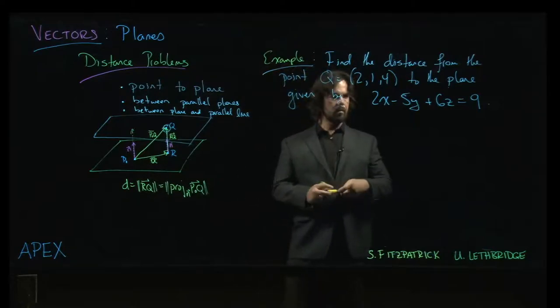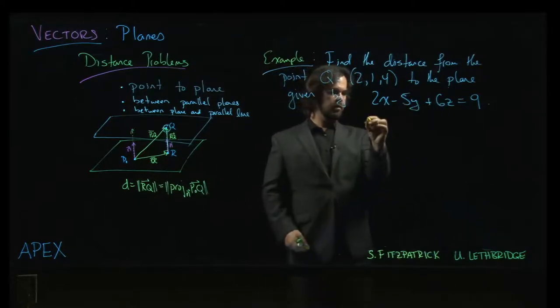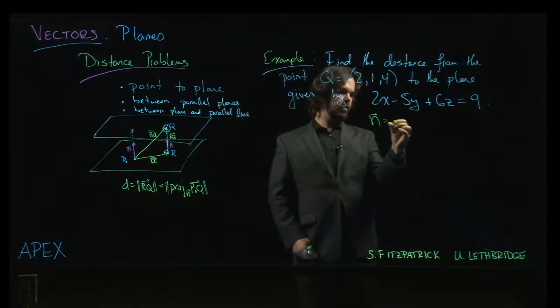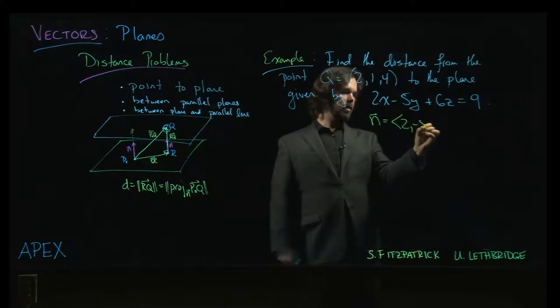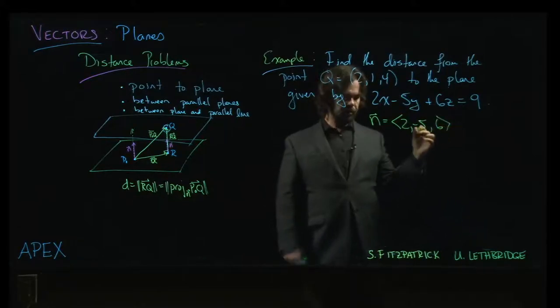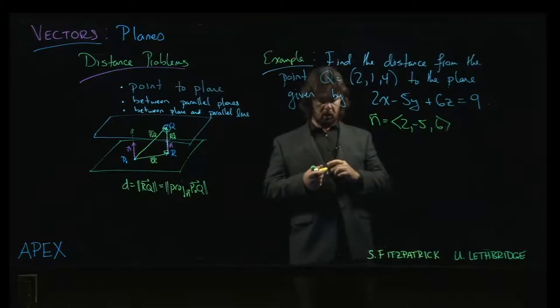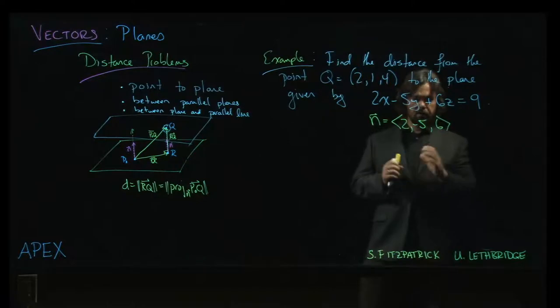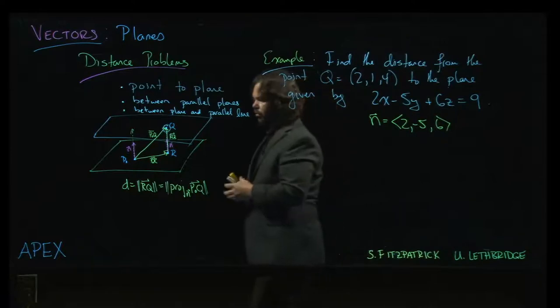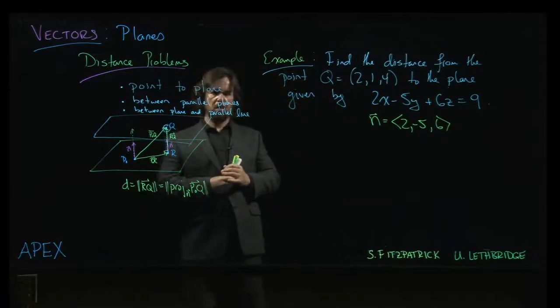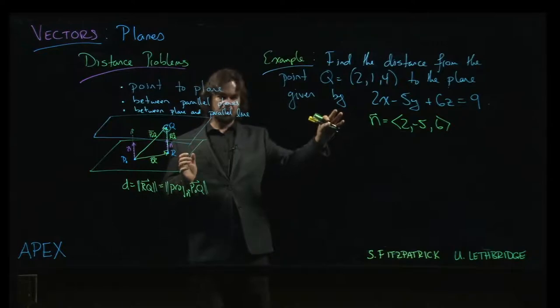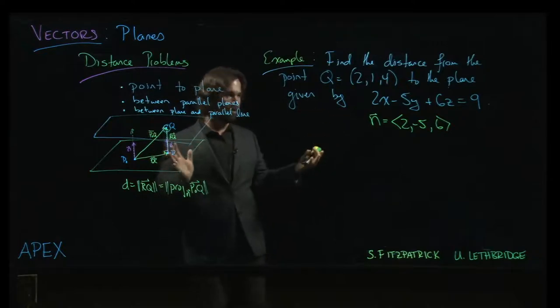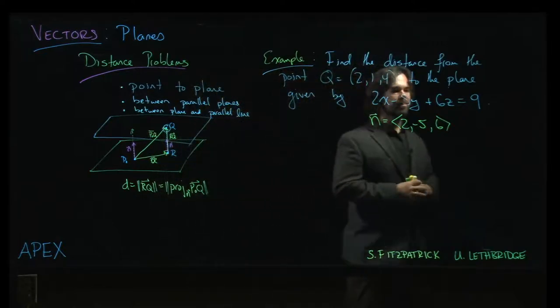We know from the equation of the plane that our normal vector, looking at coefficients, is (2, -5, 6). What's not quite so obvious from the equation is a point - we don't have a point. So how are we going to get a point on the plane?